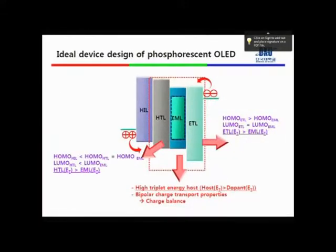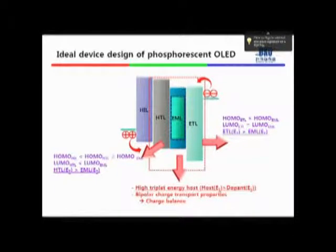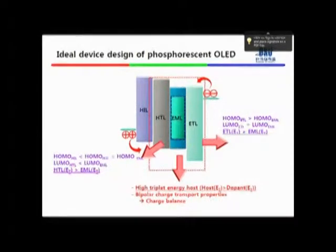There are several requirements to develop high-efficiency deep-blue devices. We usually need a hole transport layer, an emitting layer, and an electron transport layer, so we need high-efficiency deep-blue materials in all layers. Additionally, if we develop bipolar host materials, that can give higher quantum efficiency. Of course, we can use a mixed host structure, but if we want to simplify the device structure, we need bipolar-type host materials.